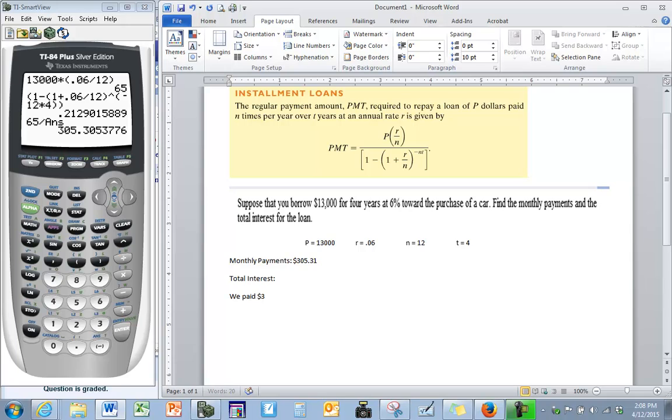Total interest, we pay $305.31 every month for four years. So if we take $305.31 times 12, that represents our months, times four, that represents our years. We have a total of $14,654.88.